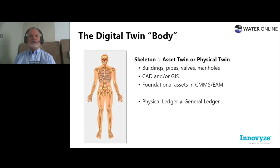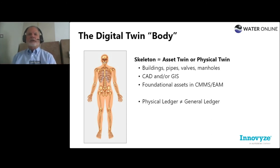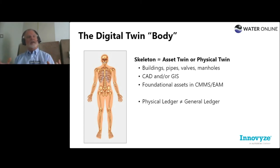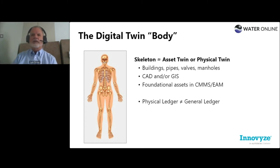One of the easiest ways to explain a digital twin uses a biology analogy. We start with the foundation — our skeleton — the asset twin or physical twin. This is our buildings, pipes, valves, manholes — hopefully in your CAD or GIS, or major assets in your CMMS or EAM. This is our physical ledger. Many capacity planning hydraulic models have a skeletonized model — the main infrastructure, your trunk lines. We start with this physical twin.